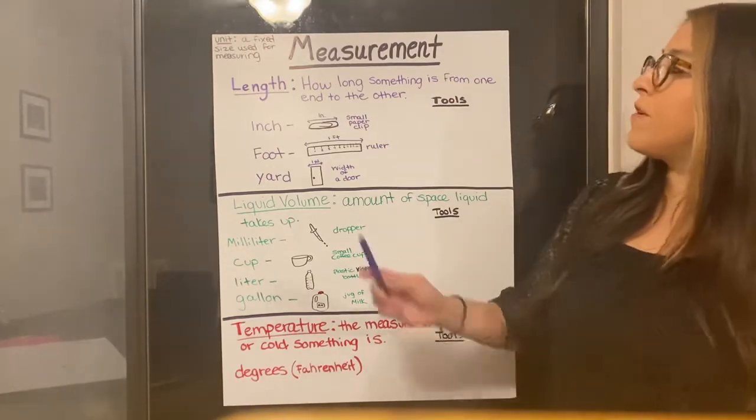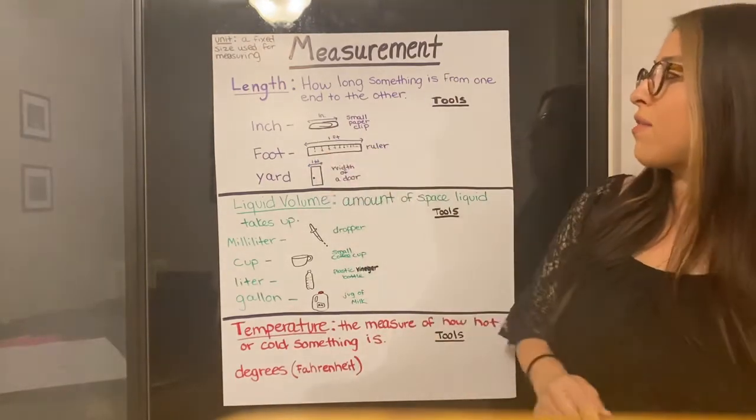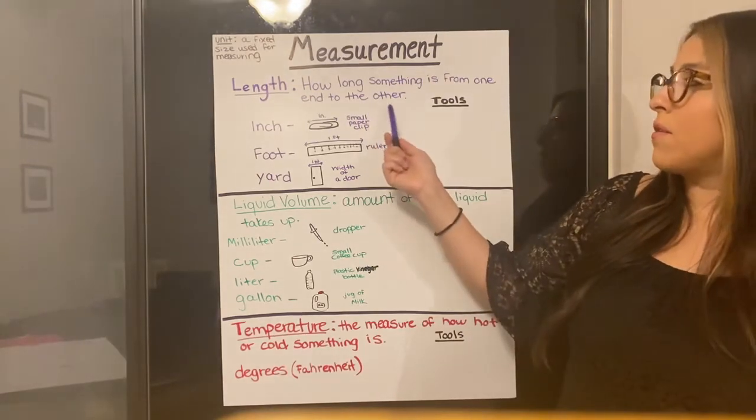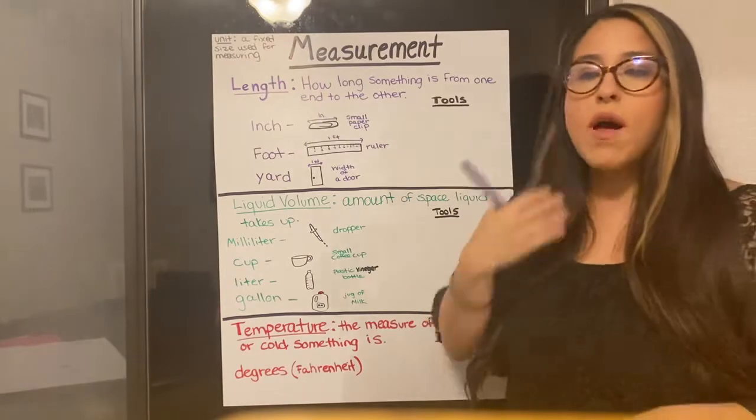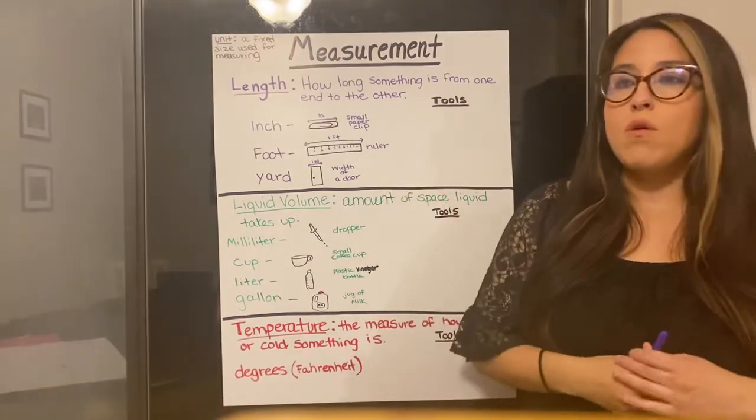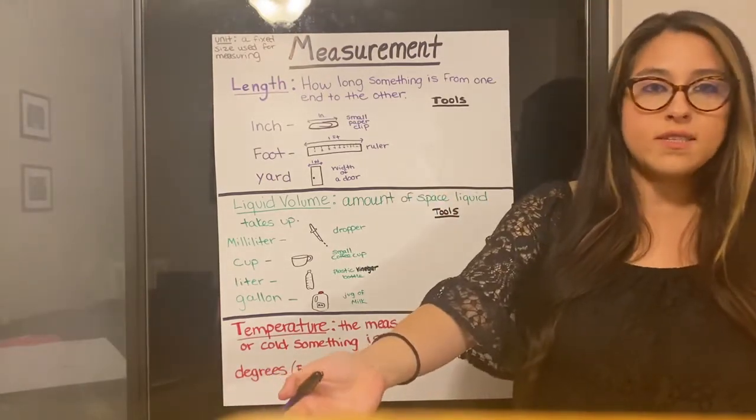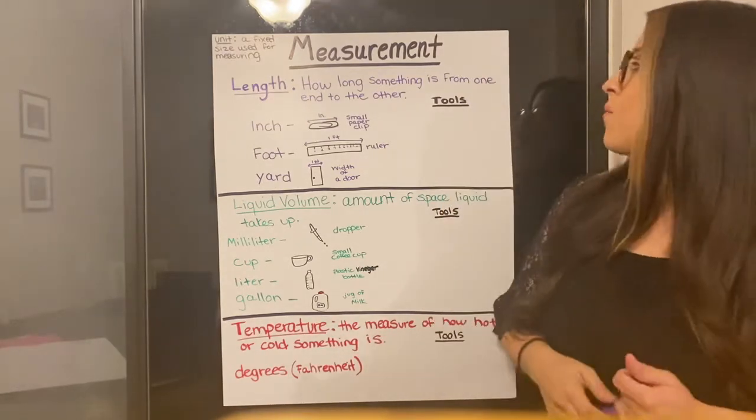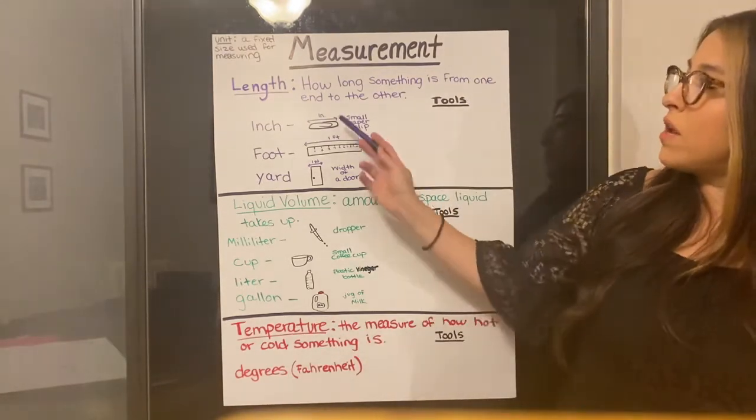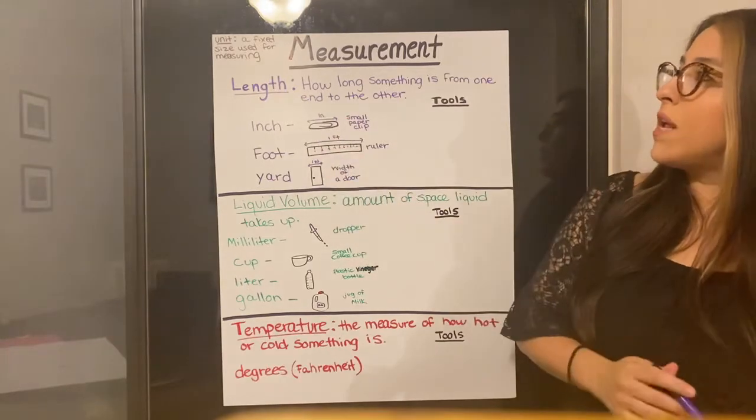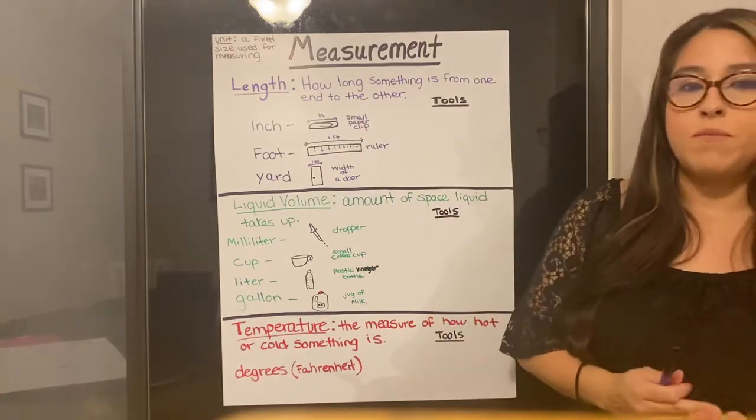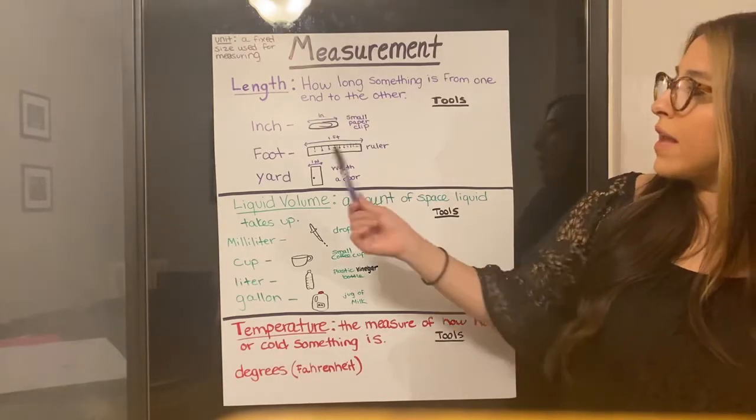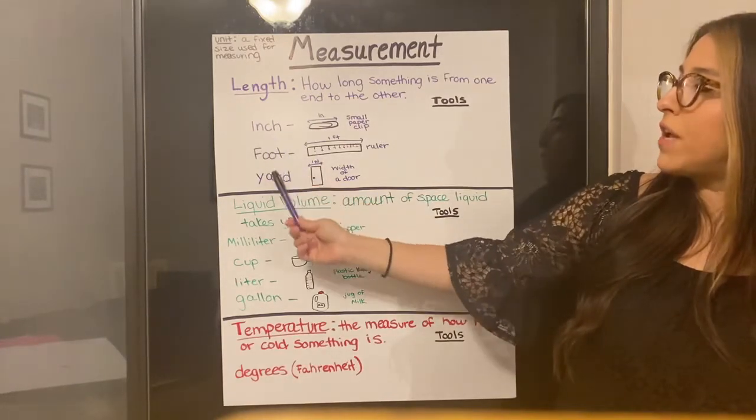So our first type of measurement is length. Length is how long something is from one end to the other. So if I want to know how tall I am or how long our desks are, that is length. We need to measure the length. So we have different units of measurement. A unit is a fixed size used for measuring. So our units for length are inch, foot, and yard.